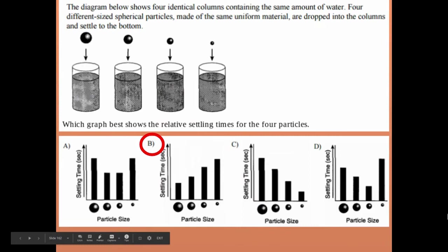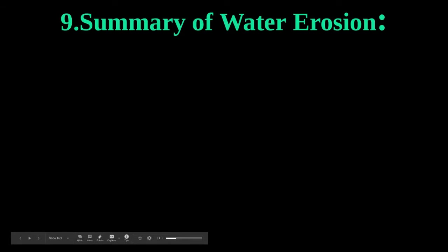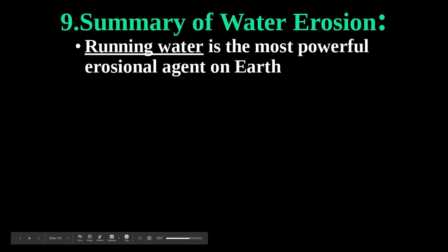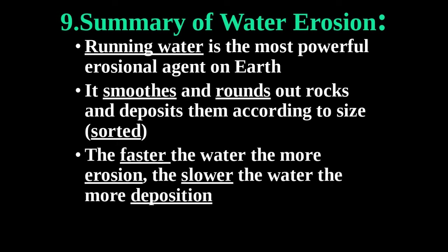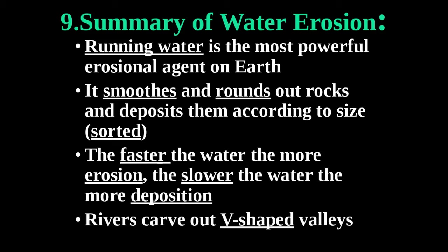For number nine in your notes, here's a summary of water erosion: running water is the most powerful agent on Earth — the primary agent of erosion. It smooths and rounds rocks and deposits them according to size. Faster water means more erosion; slower water drops off material, which is deposition. Importantly, rivers carve out V-shaped valleys. If you see a V-shaped valley, it was eroded by a stream.